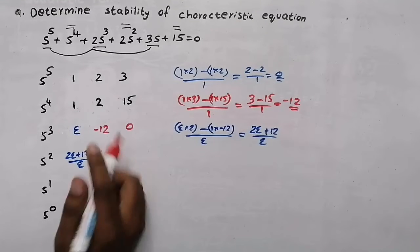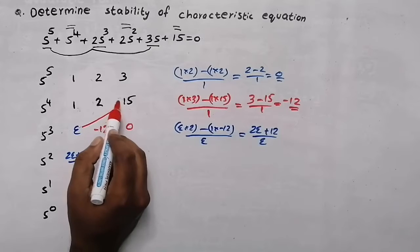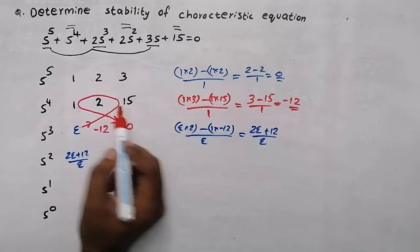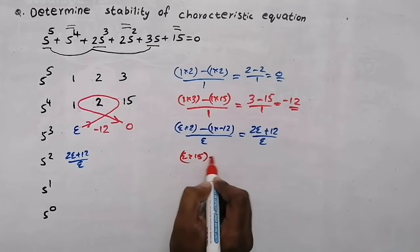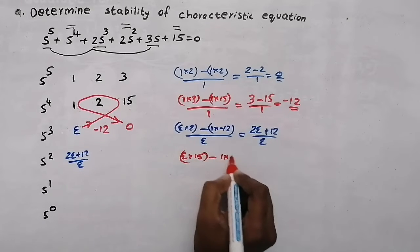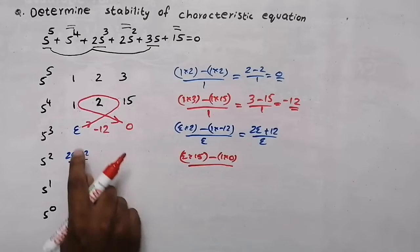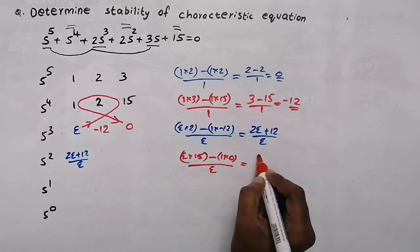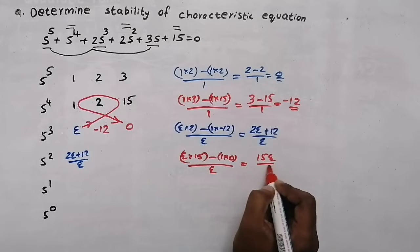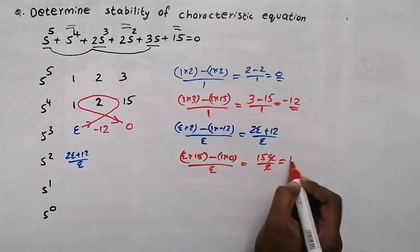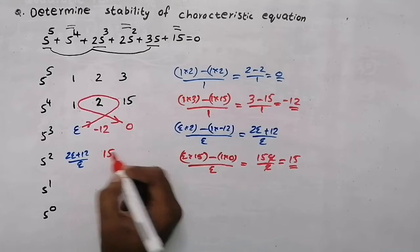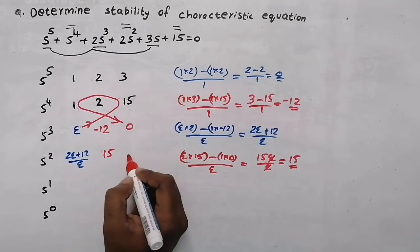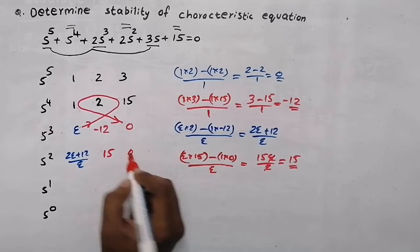Now, to get the next element, we will do the multiplication in this direction: epsilon into 15 minus 1 into 0, divided by the starting element epsilon. So we will get 15 epsilon by epsilon — epsilon and epsilon will get cancelled. We will get 15. So here the value will be 15. And the next element will be 0 because there is no term we can multiply.